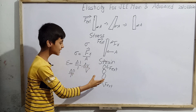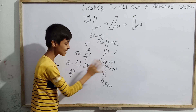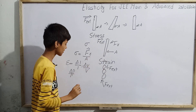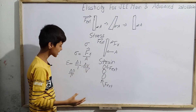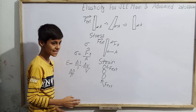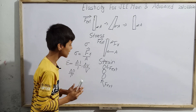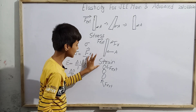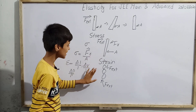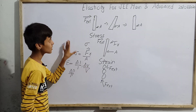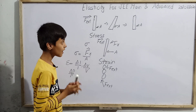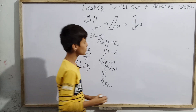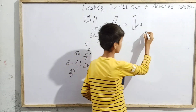Whenever the length, volume, or density of an object is increased or decreased, we say the object is in strain. So these are the covered points on strain. Now let us move on to Hooke's law.